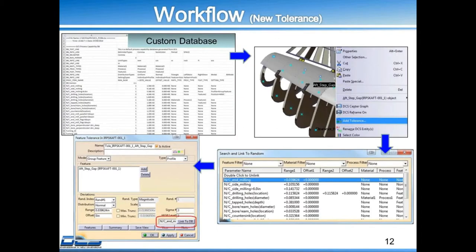I'm just going to give you an overview of our workflow to create a new tolerance. Maybe this would be as you're starting a new model and you want to start off with the database and then create all new tolerances according to that database. What you'll do first is create your custom database. Then you have your model with points and you're going to need to select either the point or the feature. When you right click, we have this new option called 'Add Tolerance.' What that does is it will pop up the link to database box, which is your list of all database items. Then you'll see in your tolerance that it created a new tolerance for you and it's linked right here.